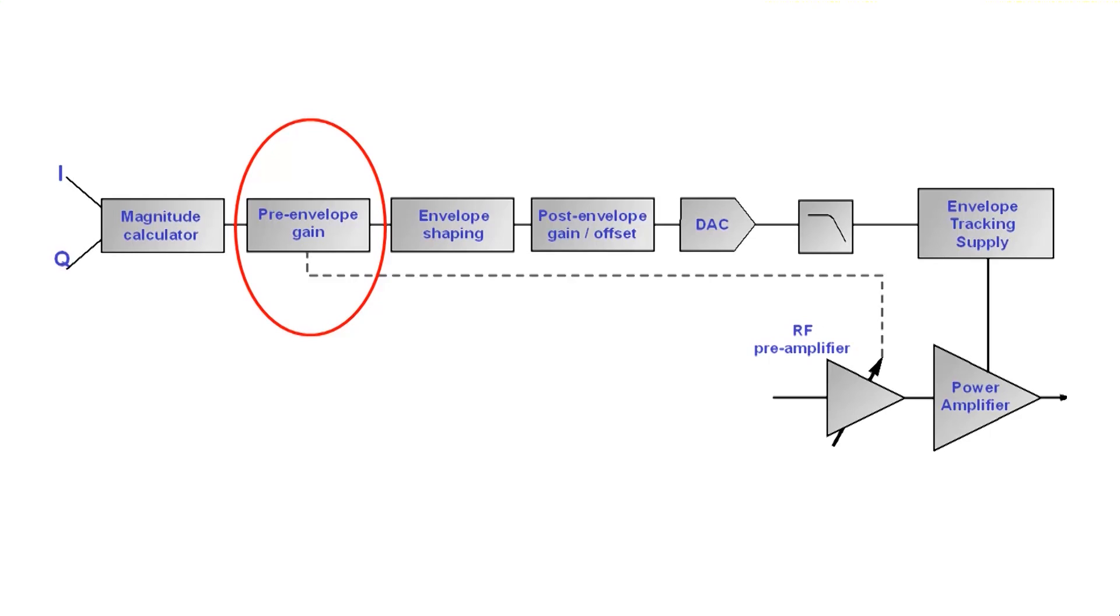Next is the pre-amplifier gain matching. This is used to accommodate any RF pre-amplifier gain changes that may occur. Following on from this is the envelope shaping. This is the key circuit block and it is needed because there is not a linear relationship between the optimum amplifier supply voltage and the power output needed. But more of this later. The post envelope gain and offset is used to accommodate any offsets and match the gain of the system to achieve the right levels to control the supply. Finally, the digital signal is converted into an analogue format and it's applied to the control terminal.